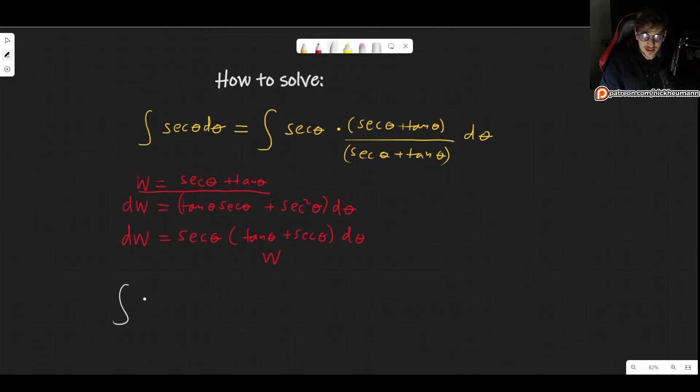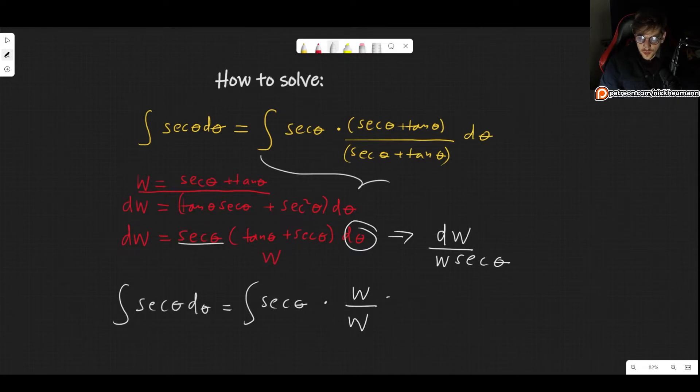So our initial integral, this is secant theta d theta. And now I just want to have this there to make sure that we know what it is. And now we plug it in. So we had the secant of theta. And then we have this thing right there, it's simply w. We have divided by w. And the d theta here, this is dw divided by w secant of theta. We simply have to divide by secant theta on this, which is the same as w. So we now plug in the d theta here, which is dw divided by w secant theta.